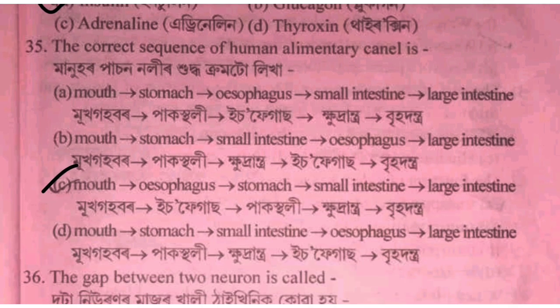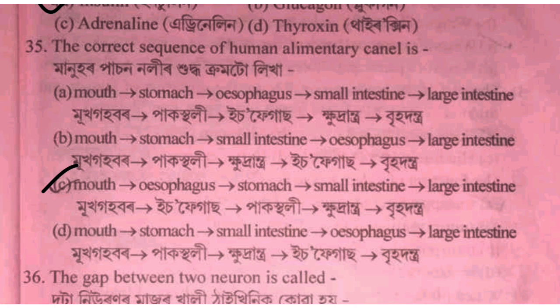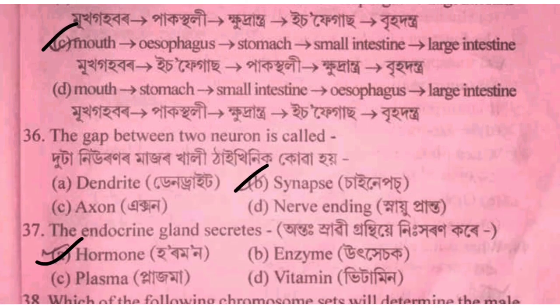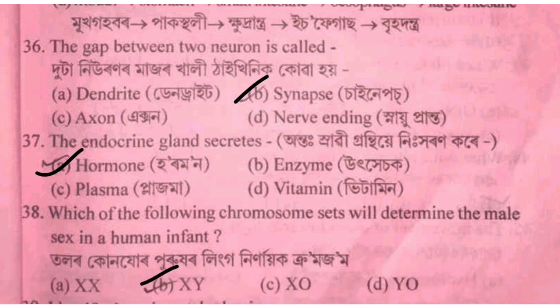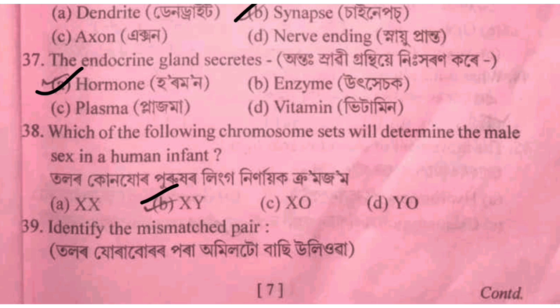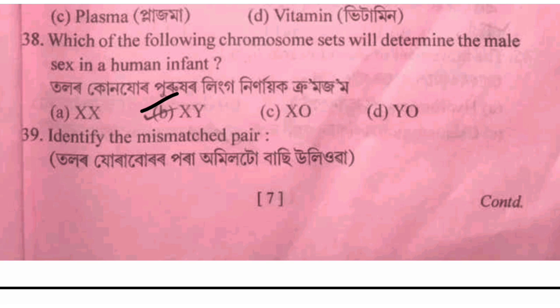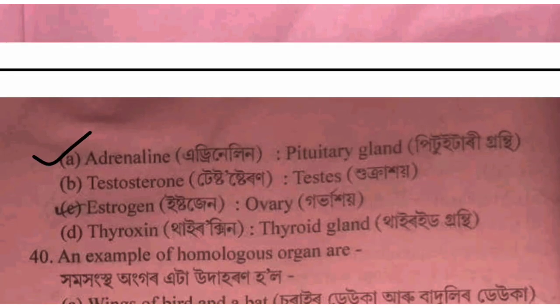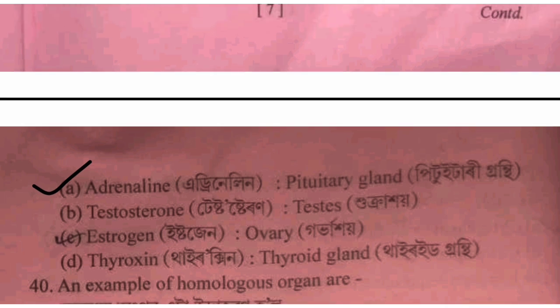The synapse connects neurons. The hormone is option B. Adrenaline comes from the pituitary — wait — adrenaline is produced by the adrenaline gland.